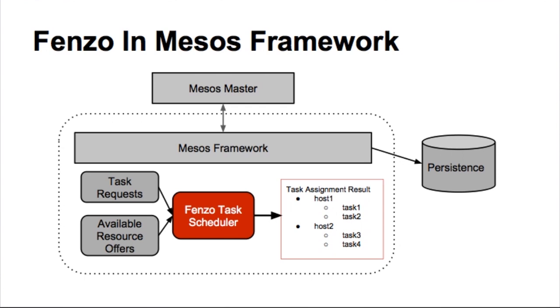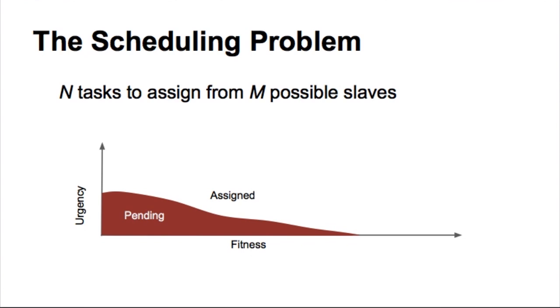When we look at the scheduling problem, we have n tasks and n possible slaves. The way we look at it is that when a task is being considered for a slave, if it's either very urgent to run or it fits extremely well on the slave, let's go ahead and assign it. Otherwise, we keep it pending and then say, let's see if it either becomes urgent later, or we find another slave where it fits extremely well, then we'll assign it. So that's the general idea.